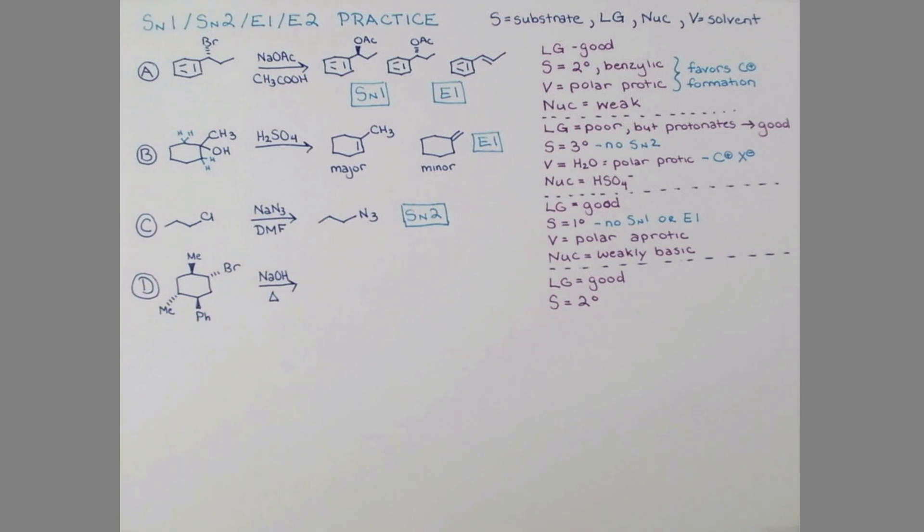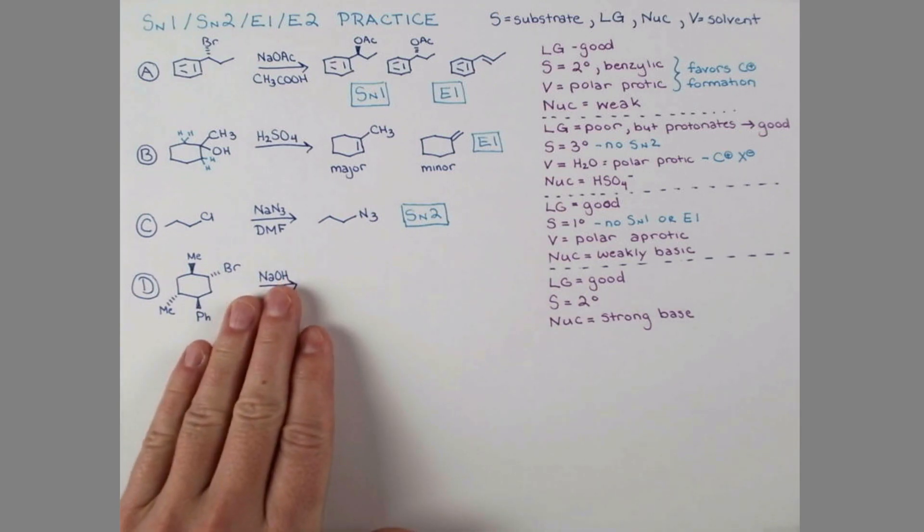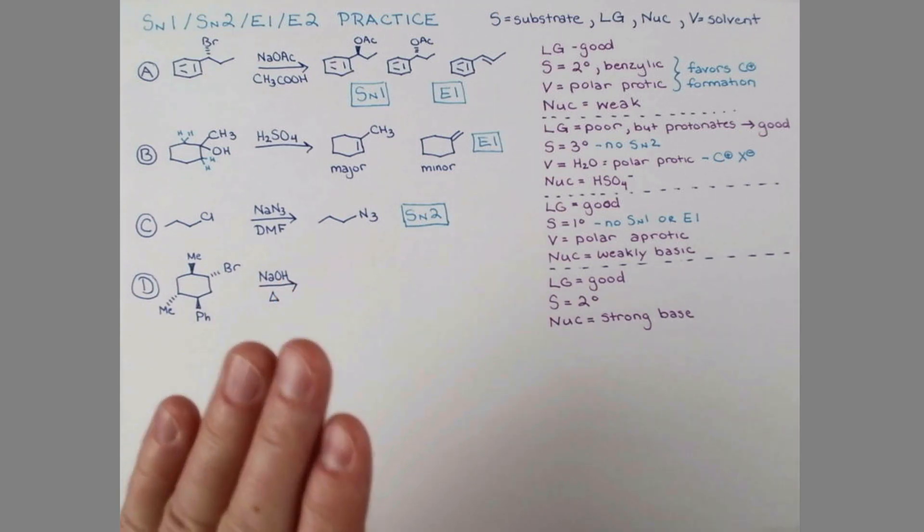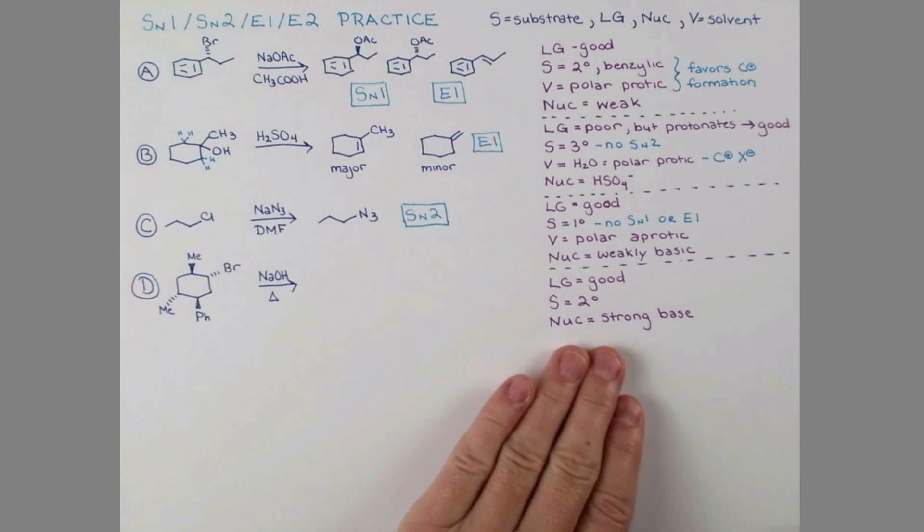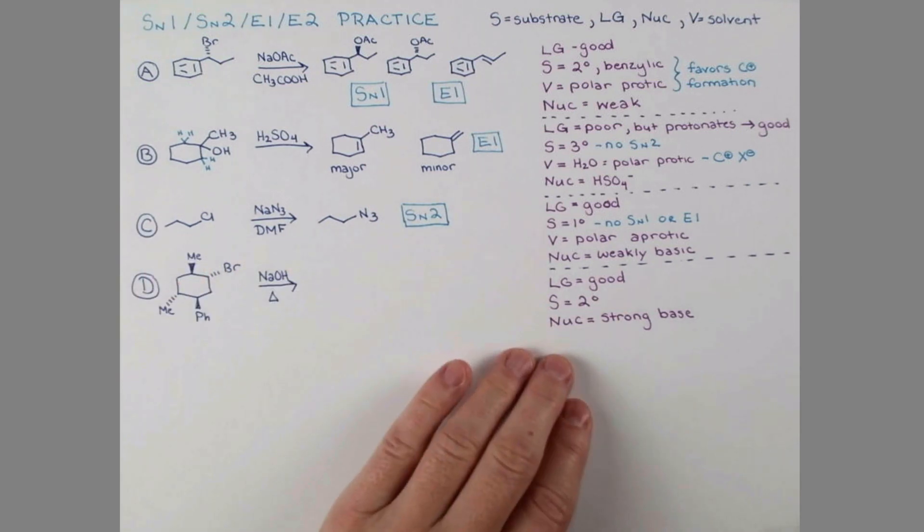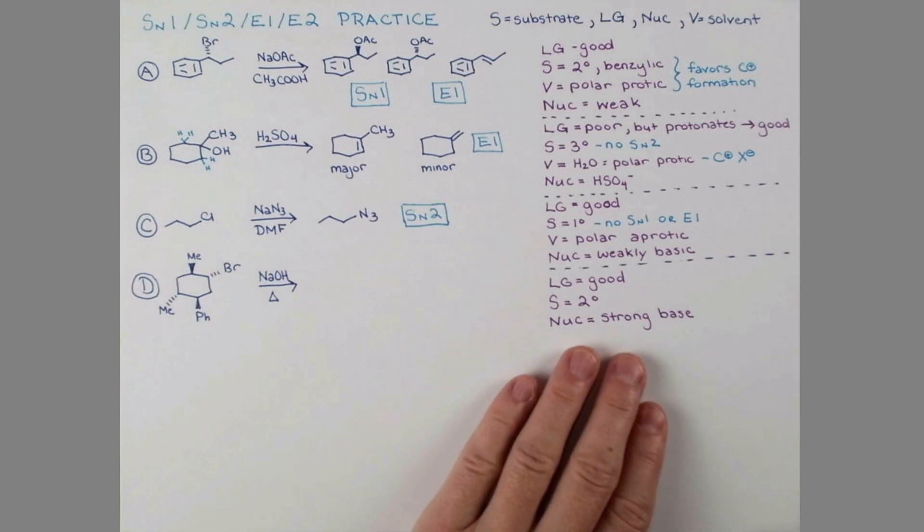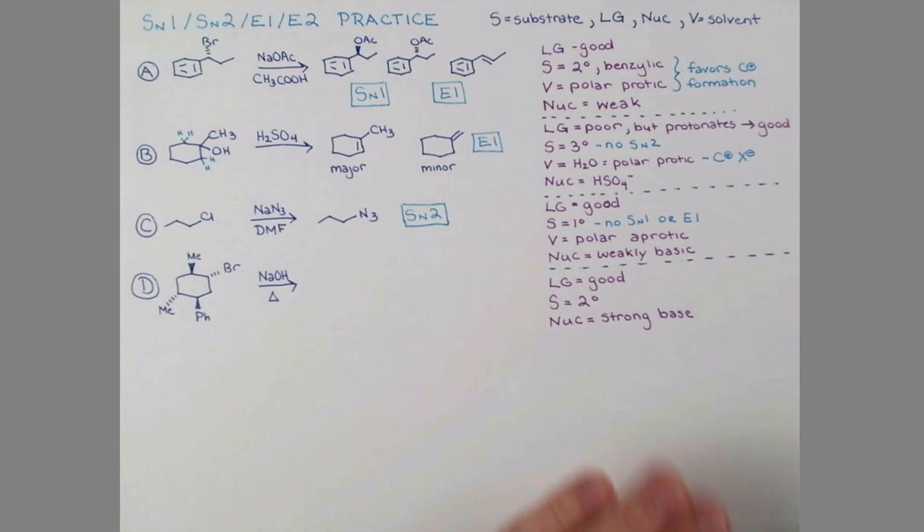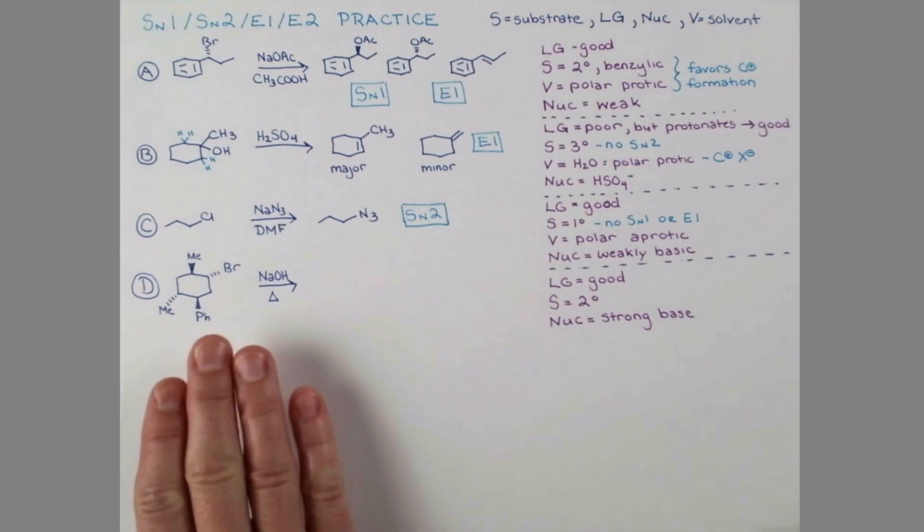I want to remind you that primary substrates that are unhindered, just with this long chain, no branching, tend to undergo substitution unless they're treated with a strong base that is very hindered itself. Again, you might want to watch my 10 minute summary of substitution elimination for examples of this.